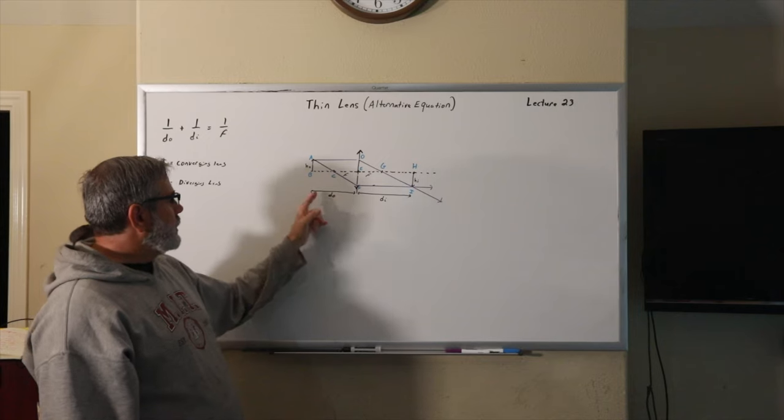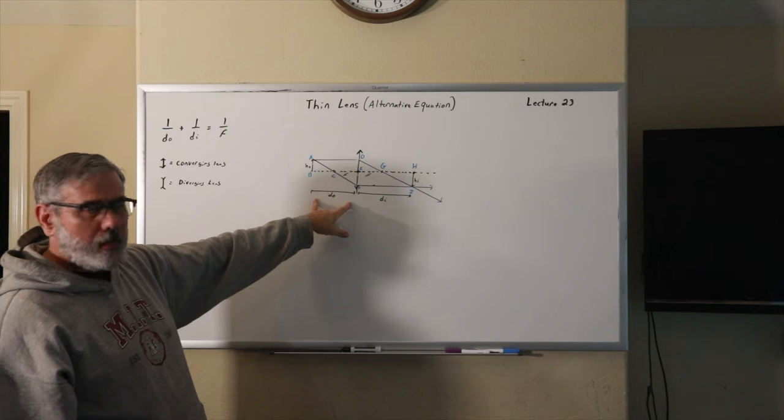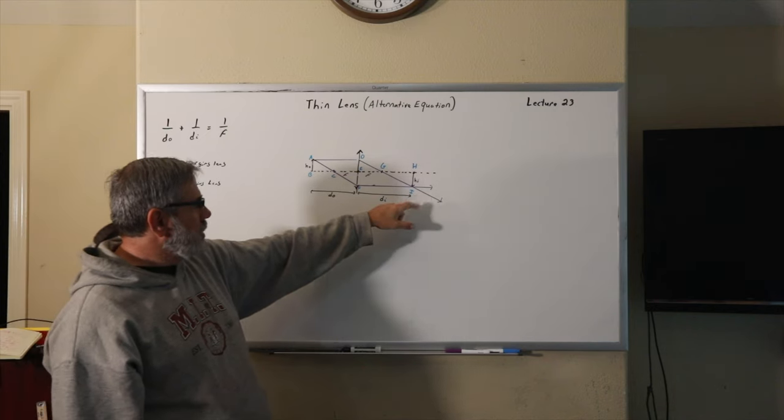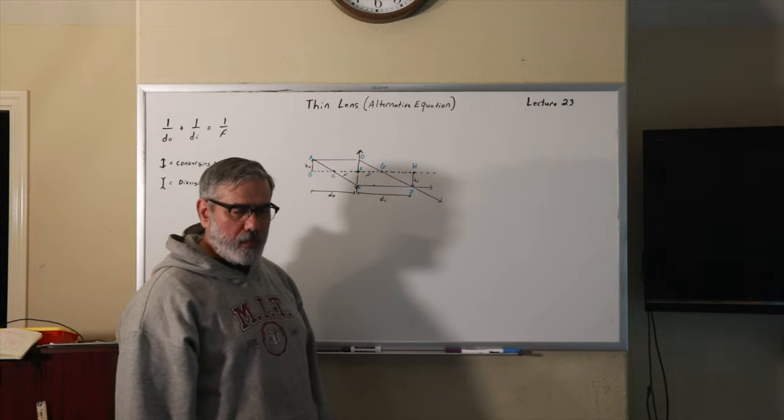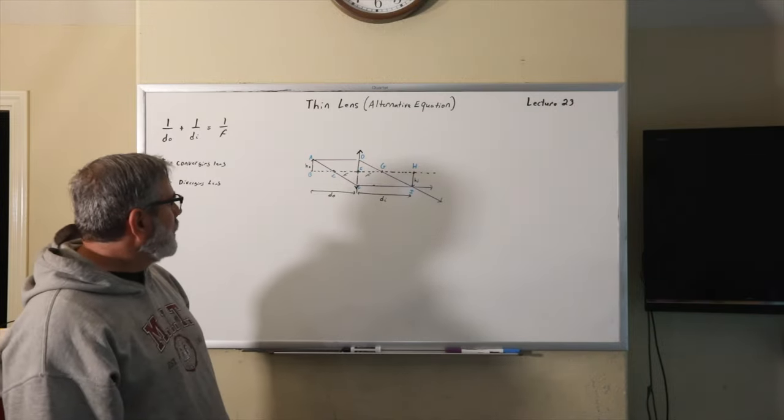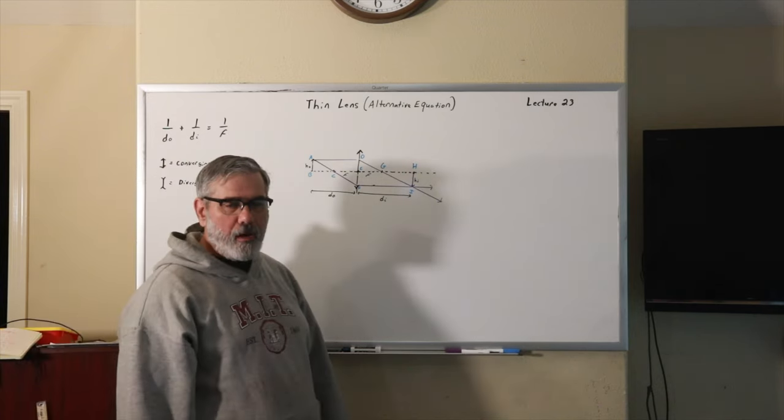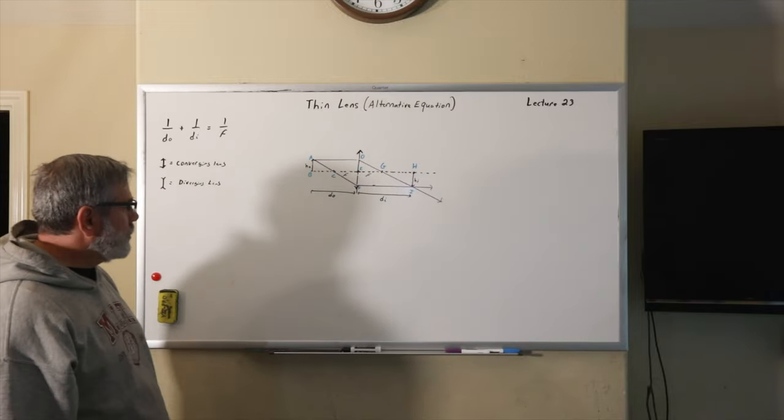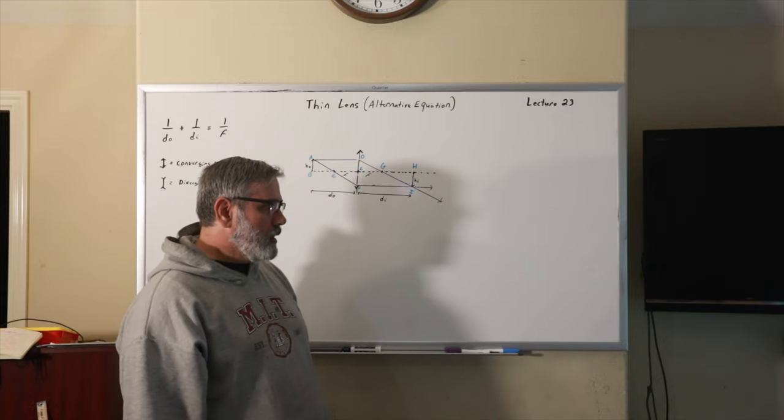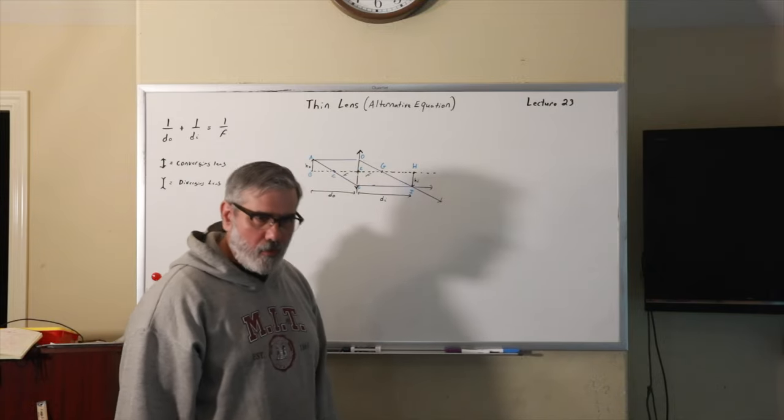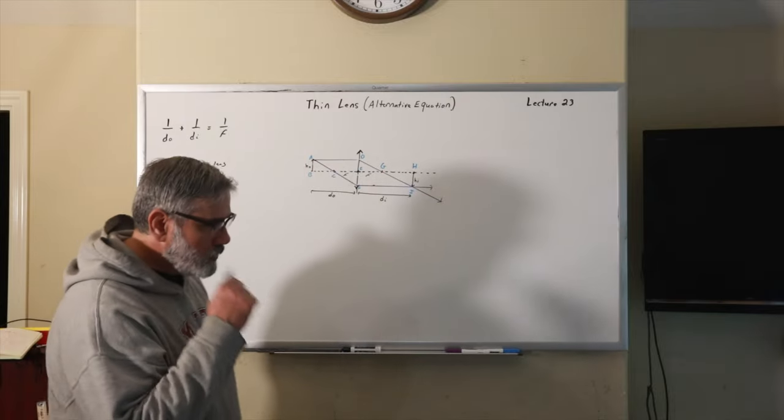So if DO, the object distance, is measured here, will be a positive quantity. If it's a real image, then DI, which is on the other side of the lens, will also be a positive quantity. And for a converging lens, the focal length will be a positive quantity. If it was a diverging lens, we would call the focal length a negative quantity. So just a little bit of a convention, to make certain things work out right. But as far as the ray optics go, you don't need to even worry about that. You can just do the geometry of it.